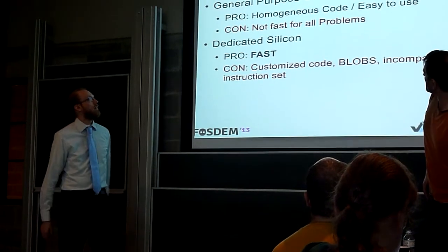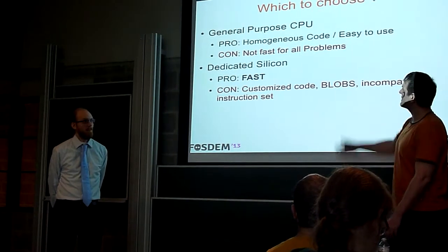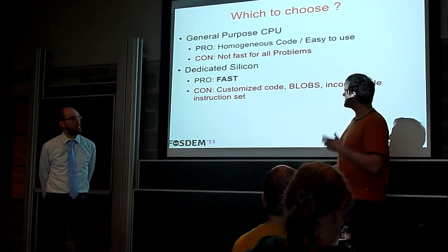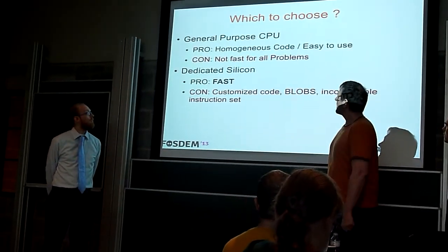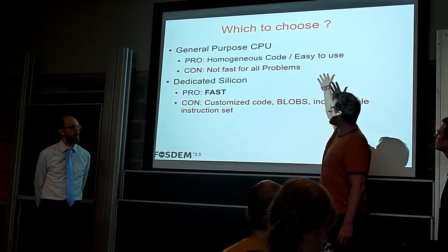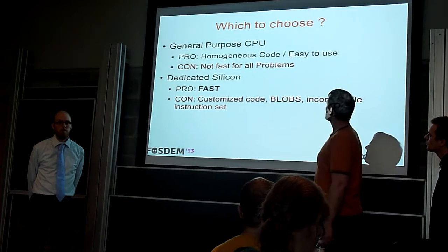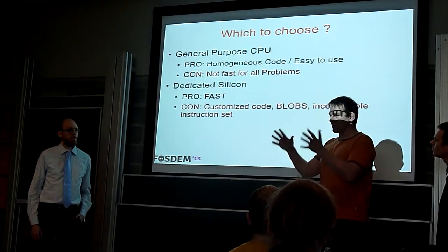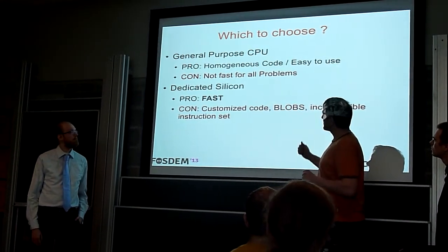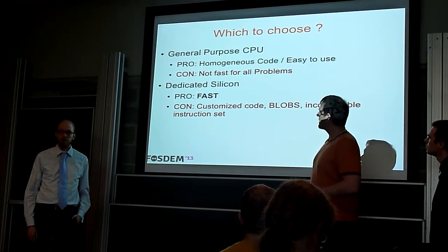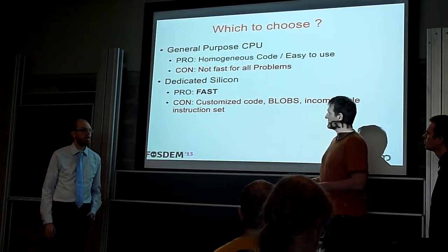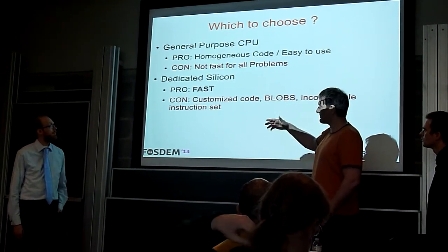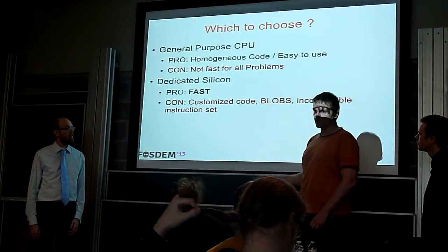So what do you want? Do you want to rely on the general purpose CPU and trust one vendor? Intel says we don't need the dedicated stuff anymore — we give you the new CPU with eight or more cores and they can do everything. The pro-argument is you have the same code running everywhere, if you stay under the Windows domain. But it's not fast. Intel still has to prove that you can have a fast solution for everything with a general purpose path. Then you have the dedicated silicon — it's fast, but the problem is customized code, binary blobs, incompatible instruction sets like shaders in 3D or OpenCL — it's all different.